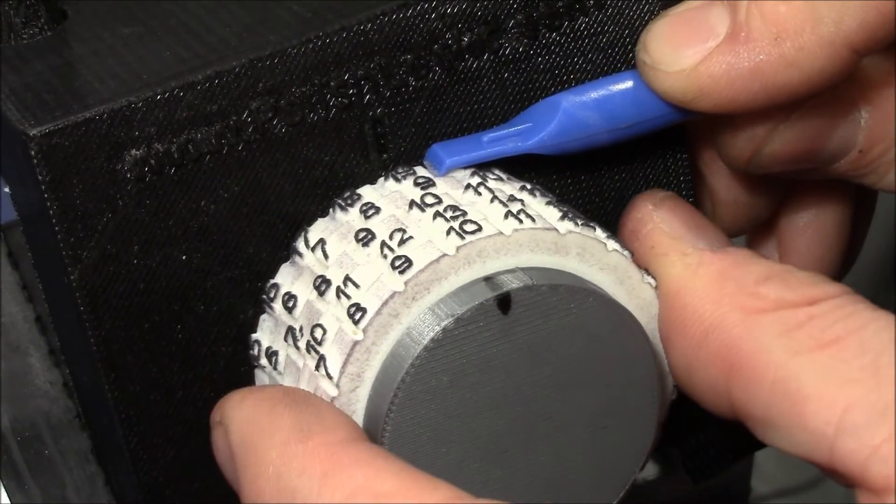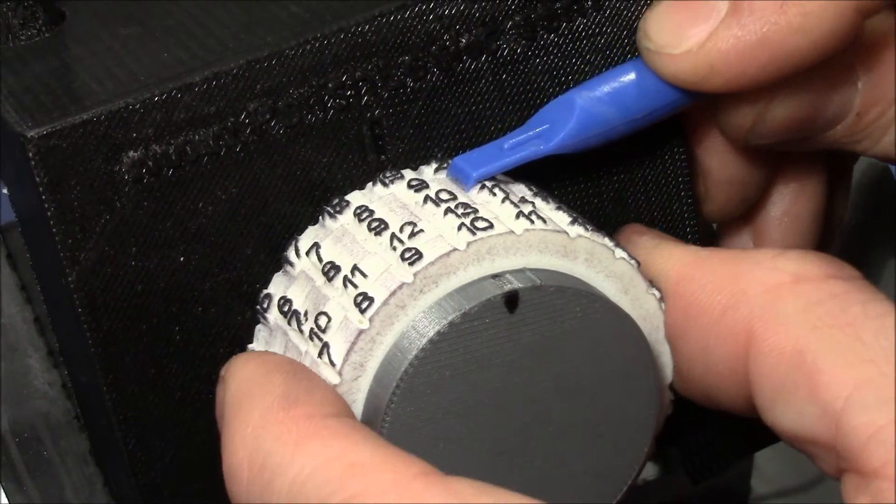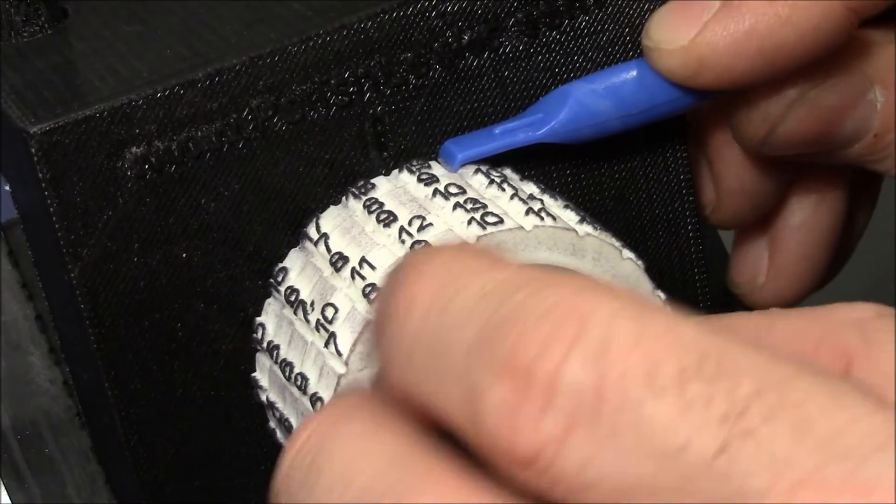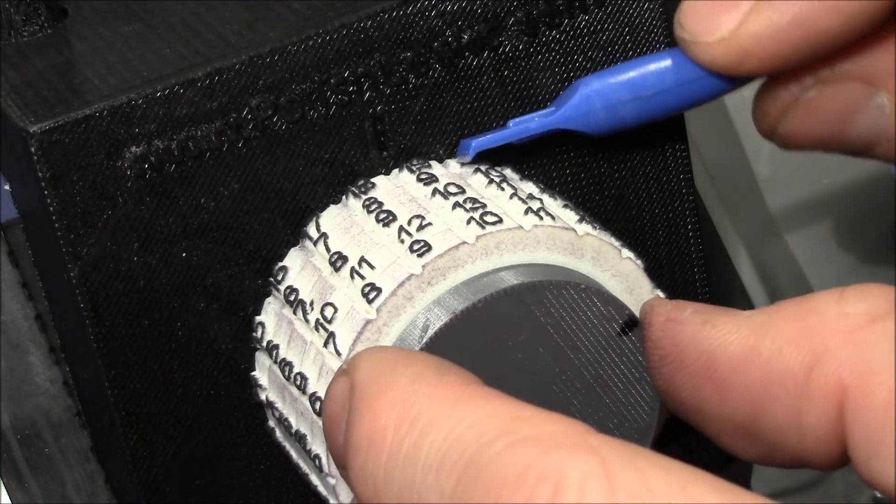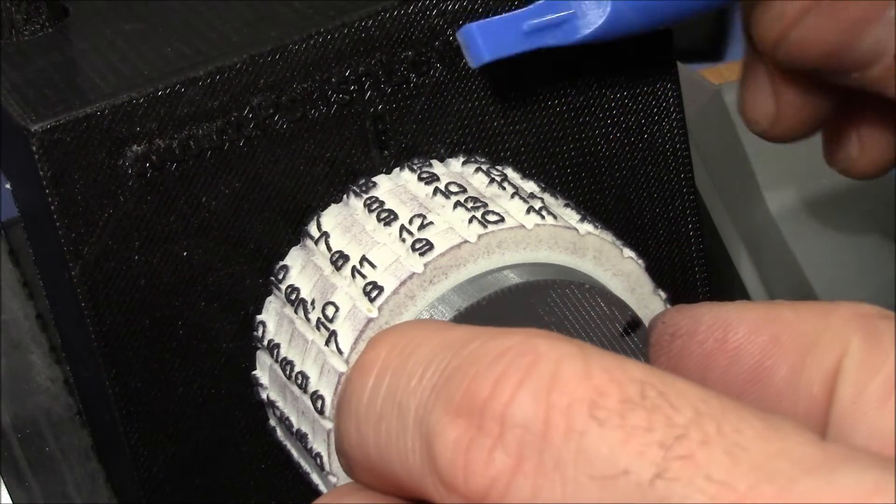So let's pretend we want to decode this lock and just want to try the gate testing method. So I apply tension.